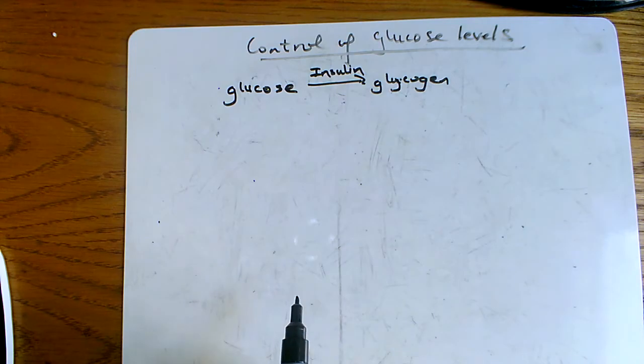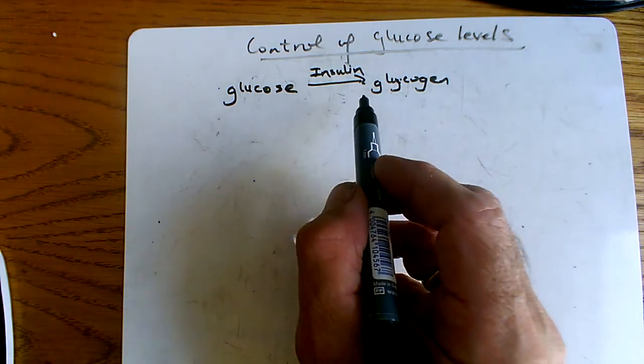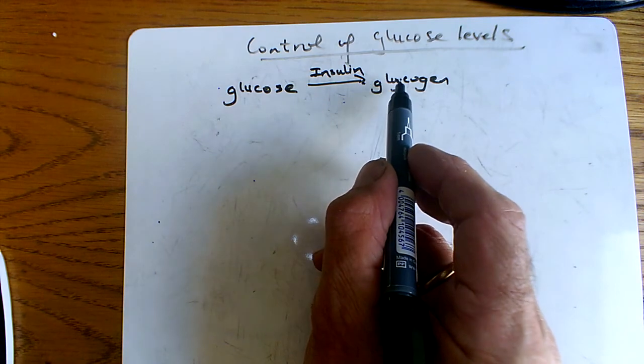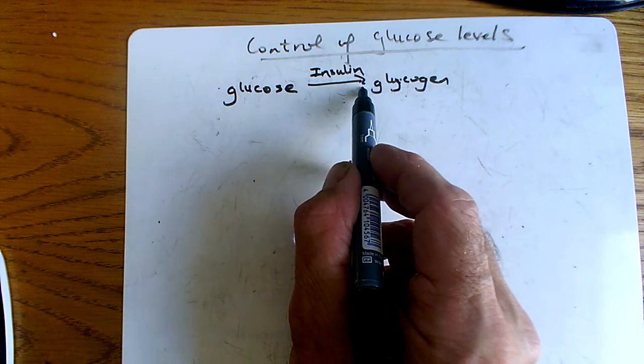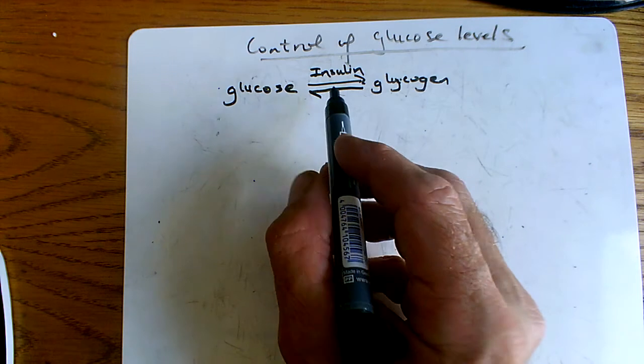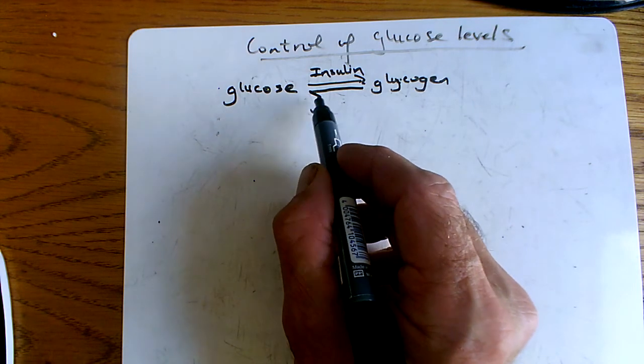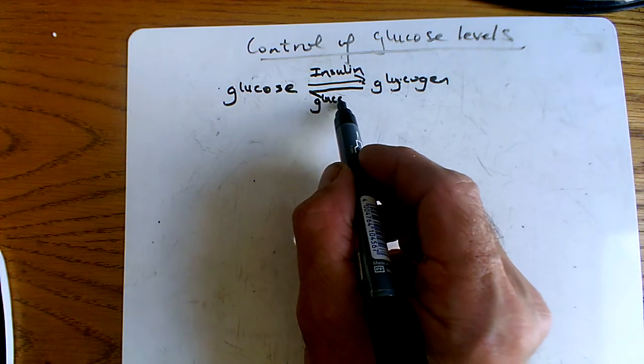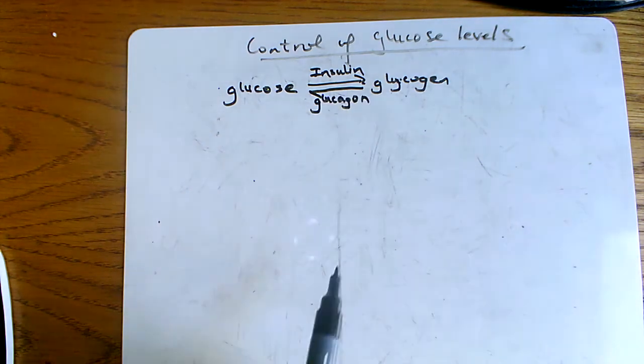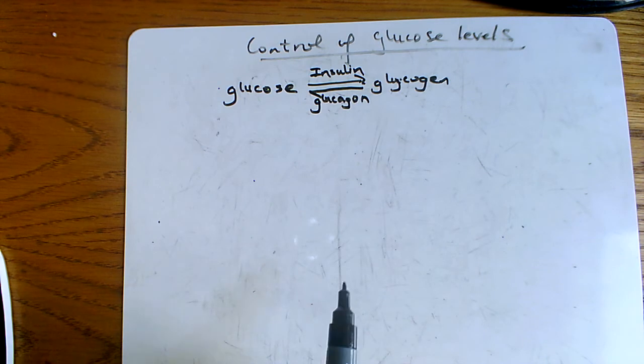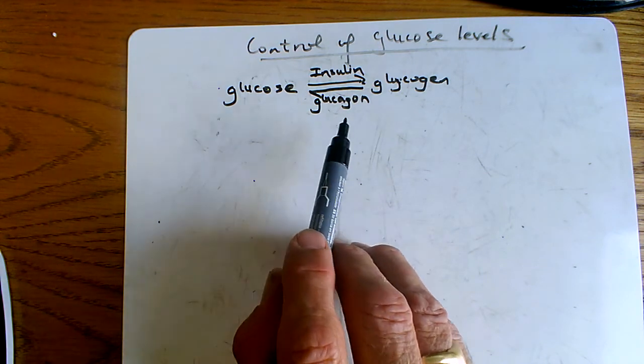And the storage compound glycogen can be converted back into glucose by a hormone called glucagon. All the G's! And this takes place in your liver.